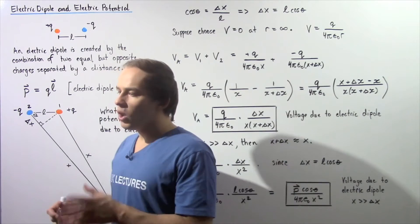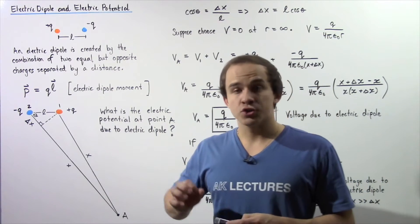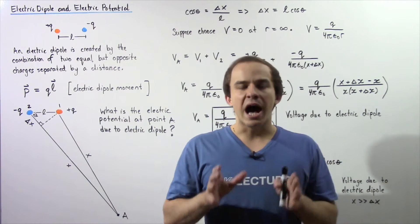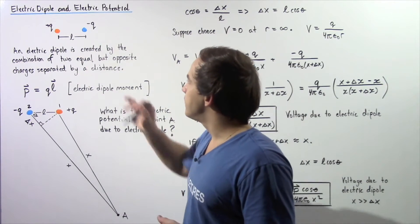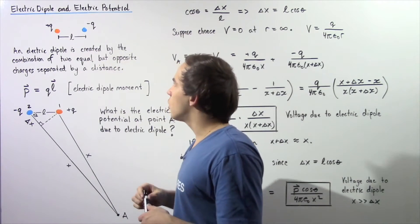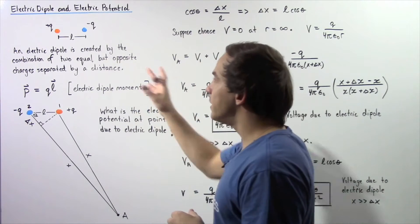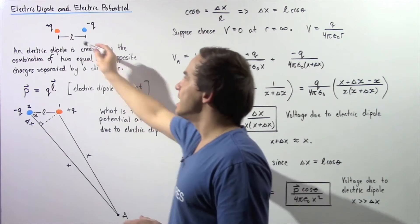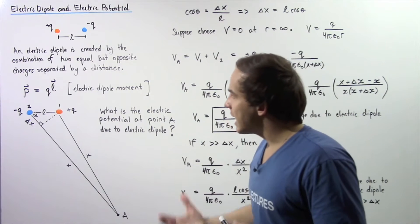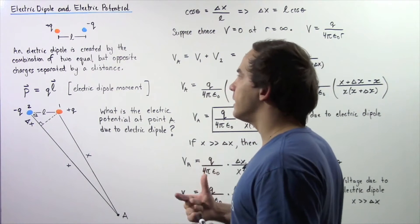Let's begin by recalling what an electric dipole is. An electric dipole is created any time we have a separation of electric charge that has an equal but opposite quantity. For example, a positive charge given by positive q and a negative charge given by negative q — same quantity, opposite signs — separated by a distance L. So an electric dipole is the combination of two equal but opposite point charges separated by a certain distance.